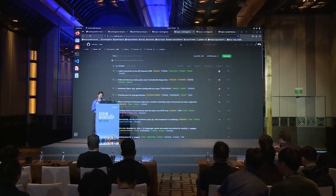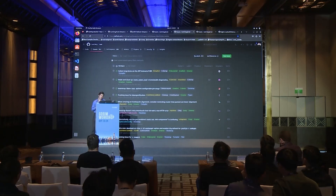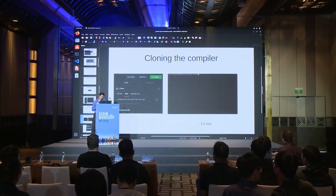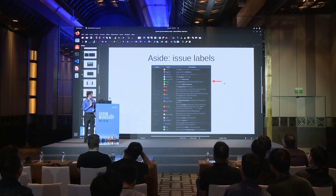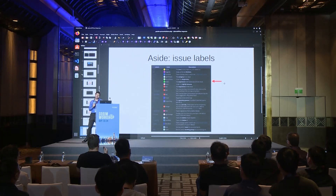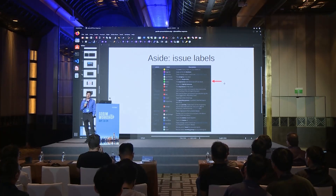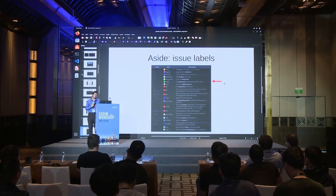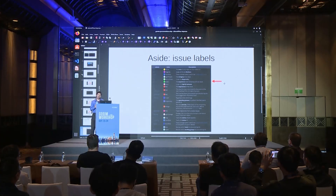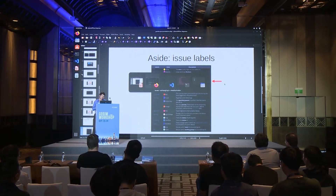Sometimes the person willing to mentor has already written notes on how to approach the issue, and sometimes they just say they're willing to talk it through. Generally, whoever wrote E-mentor is going to be approachable for the duration of fixing the issue. There are also a lot of other labels — E-easy, medium, hard, mentor, help wanted — indicating the general experience level needed, as well as labels for what area of the compiler the issue relates to. The Rust Dev Guide has info on what they all mean.